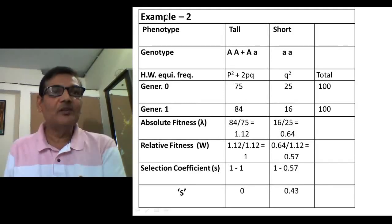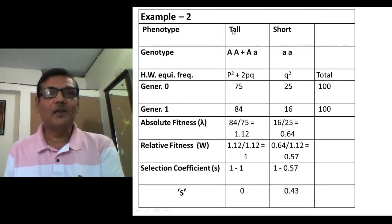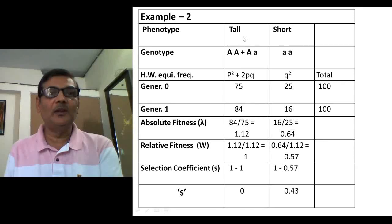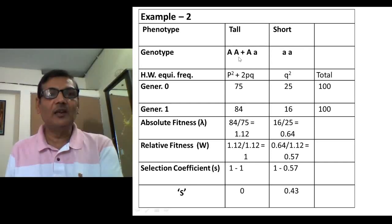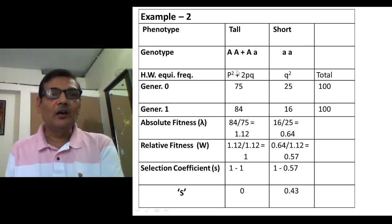In example 2, two types of plants are considered: tall and short, similar to Mendelian segregation in garden pea (Pisum sativum). Tall plants are dominant and can be homozygous (AA) or heterozygous (Aa), while short plants are recessive (aa). Under Hardy-Weinberg equilibrium, P² and 2Pq represent tall plants, while Q² represents short plants.